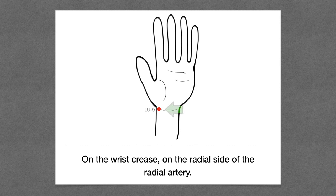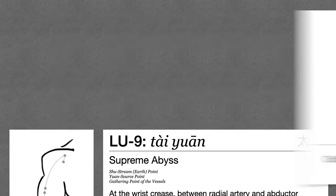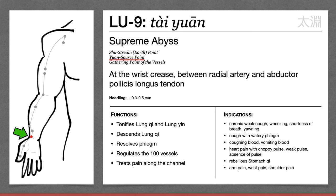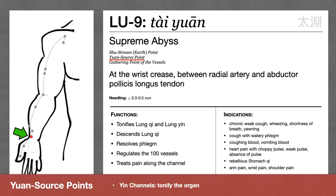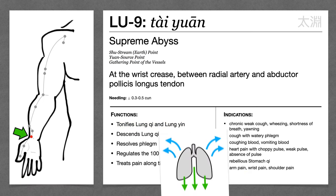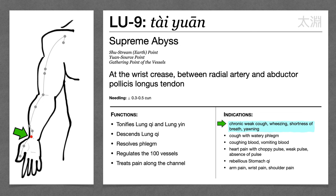Lung 9 is located at the wrist crease on the radial side of the radial artery. Lung 9 is the Yuan source point of the lung channel. On yin channels, Yuan source points tonify the yin organs, so Lung 9 tonifies the lung — specifically lung qi and lung yin. If the lung is deficient, it can fail in its function of disseminating and descending, so we might see a chronic weak cough, shortness of breath, and yawning. Deficiency can lead to phlegm formation — if lung qi is deficient, there's not enough qi to move the fluids, so we can end up with copious watery phlegm. If lung yin is deficient, the heat can dry out the fluids, causing scanty dry phlegm. In either case, Lung 9 tonifies the lung, descends lung qi, and resolves phlegm.